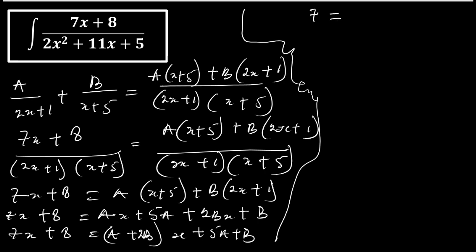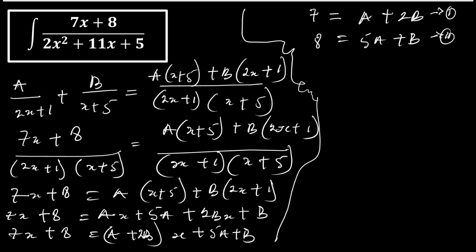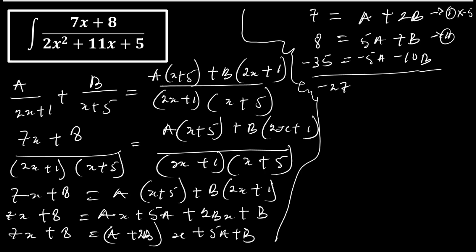Equating coefficients: 7 equals a plus 2b (equation one) and 8 equals 5a plus b (equation two). I'll use the elimination method. Multiplying equation one by minus 5 gives minus 35 equals minus 5a minus 10b. Adding to equation two: minus 35 plus 8 equals minus 27, and 5a minus 5a cancels, leaving minus 27 equals minus 9b.